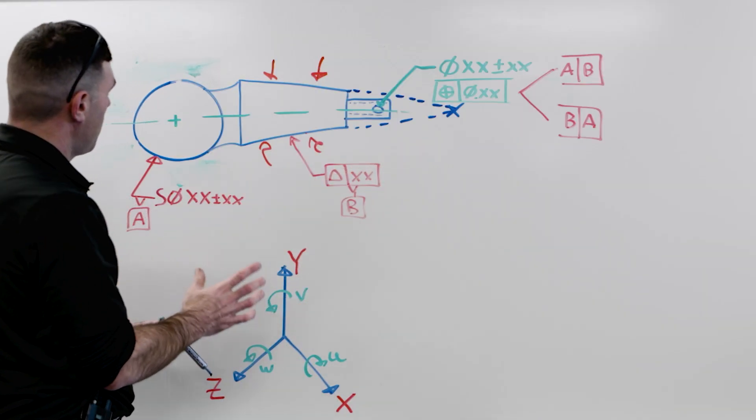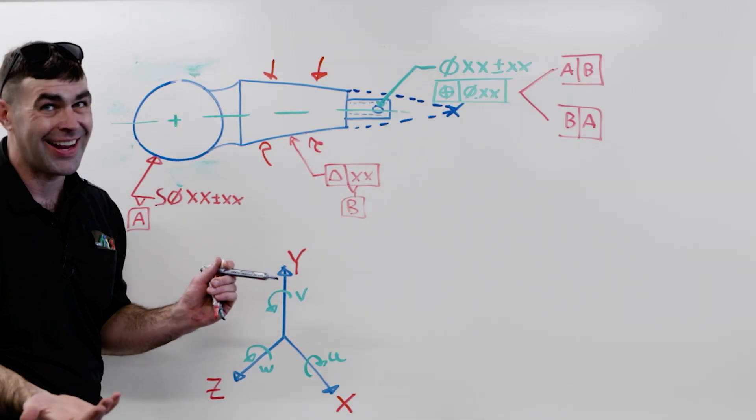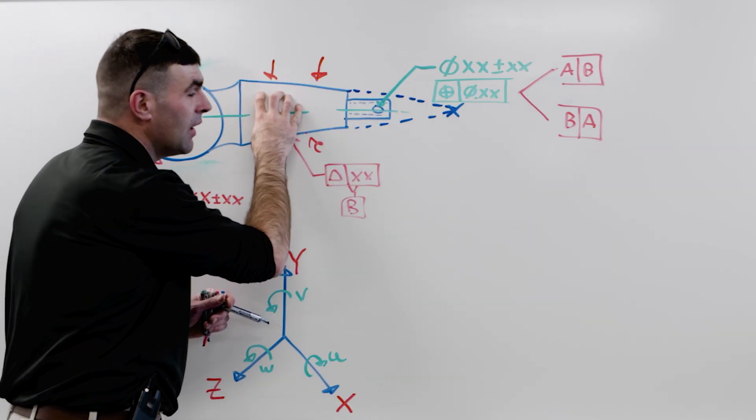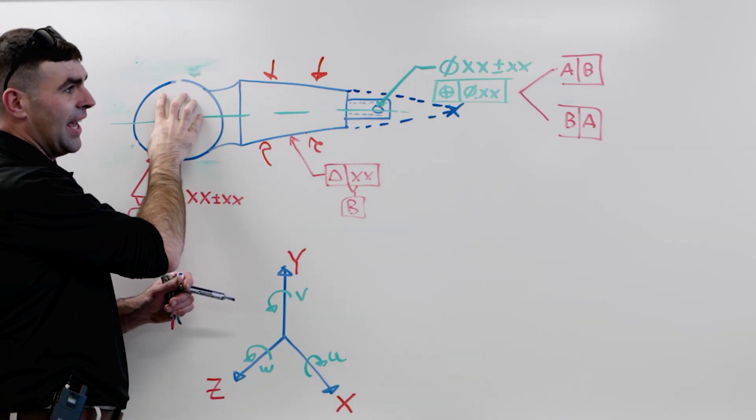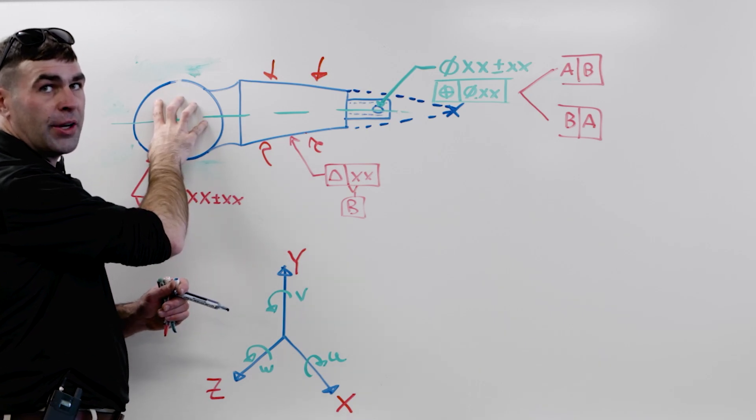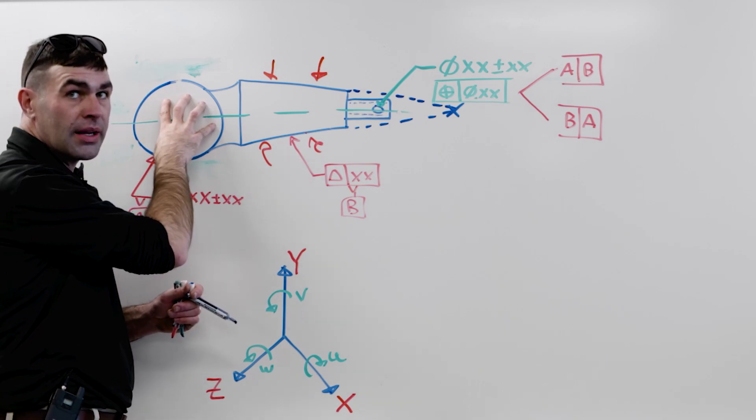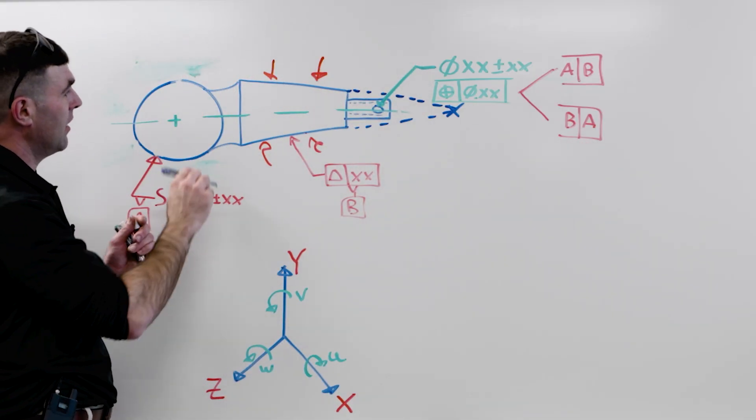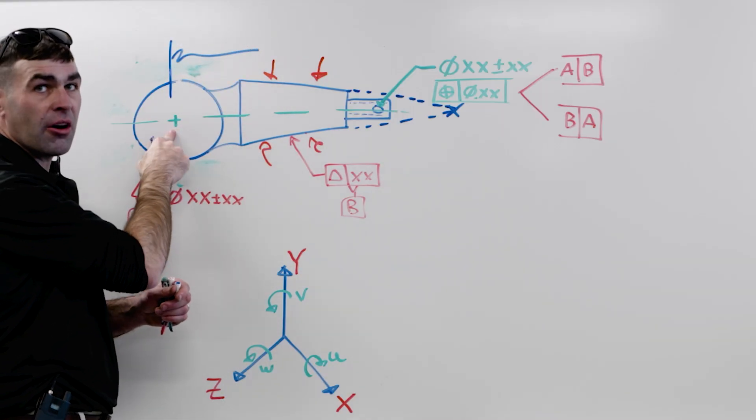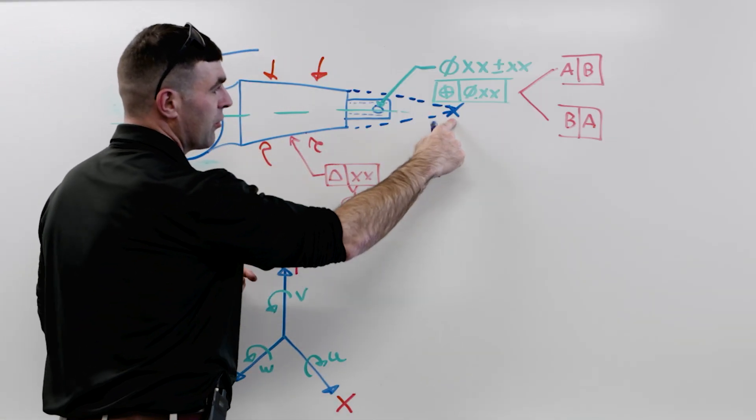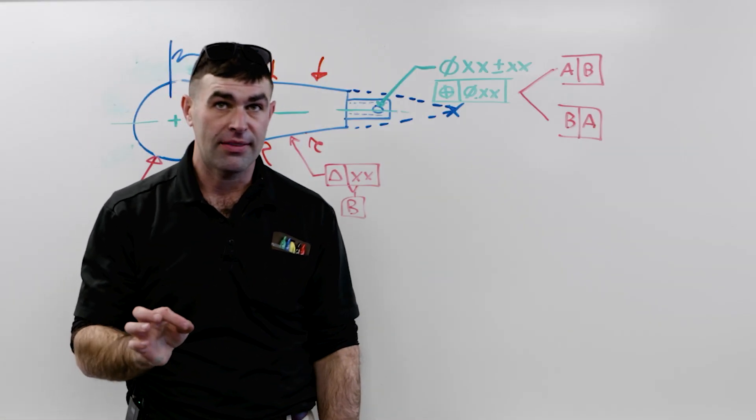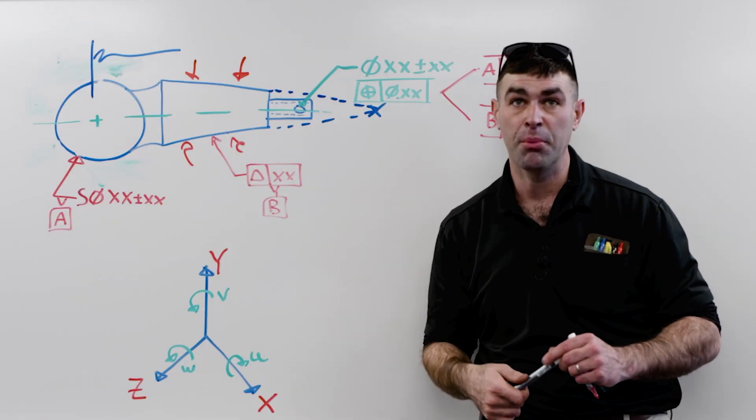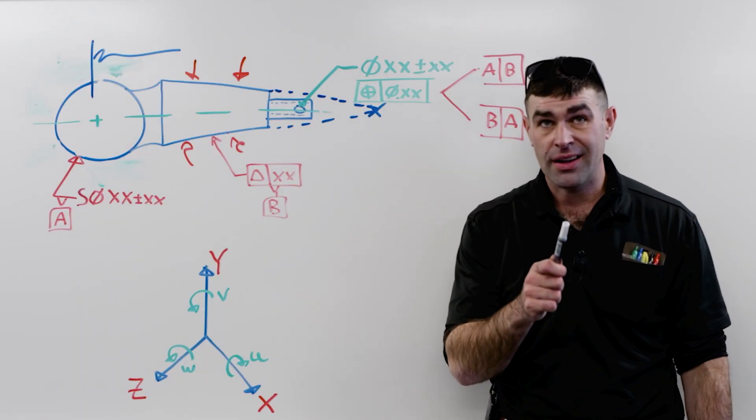We grab A. It doesn't change anything. We've controlled five degrees of freedom with this. Grabbing A can't control the last rotational degree of freedom, so it does nothing. Just because we put A here does not mean we're measuring anything from here. Your translational measurements have to come from this point out in space.